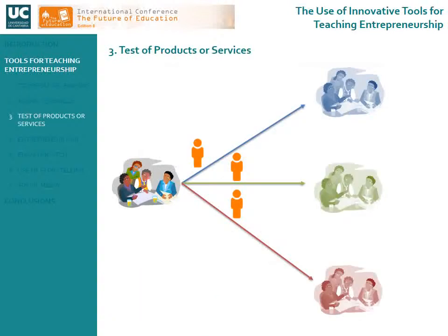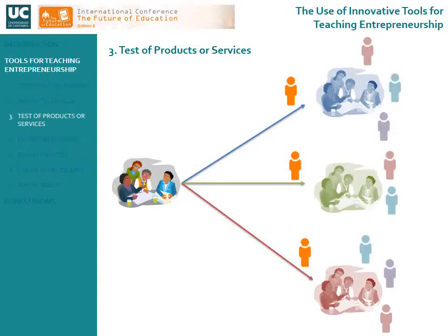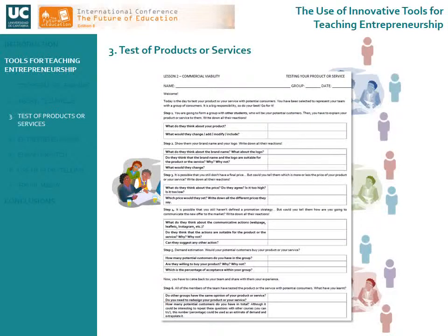Within the commercial viability of their business projects, students have to test their products or services with their peers, who become potential customers. In this way, we form groups of students with representatives of each business project. All team members need to know their project, and especially need to know how to communicate, explain and defend their product or service, their pricing policy, their distribution policy, and their promotion actions. The most important issue about this technique is to obtain feedback, different ideas or points of view from their peers as potential customers, and especially sensitivity to the proposed variables.